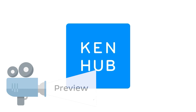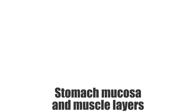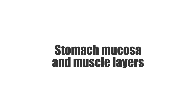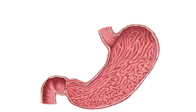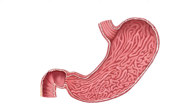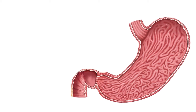Hello everyone, this is Megan from Kenhub and welcome to another anatomy tutorial. In today's tutorial we will be looking at the mucosa and the muscle layers of the stomach. When we're discussing these structures we're going to be discussing them as they are seen with the naked eye, or macroscopically. We're not going to use histological slides or a microscope. So let's begin with a complete view of the stomach.